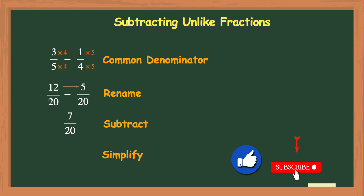In this case, however, 7 20ths is not an improper fraction and 7 and 20 do not share any common factors other than 1. So our fraction of 7 20ths is already simplified.